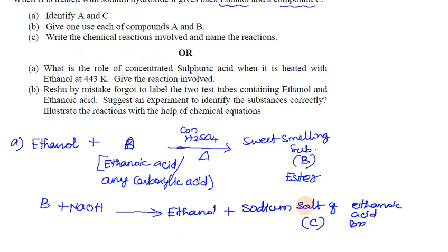Identifying the compounds: A is a carboxylic acid (ethanoic acid), B is the ester formed, and C is the sodium salt of the carboxylic acid — sodium ethanoate.